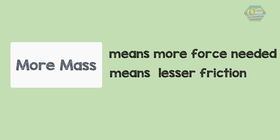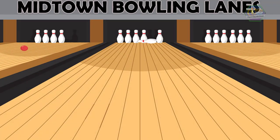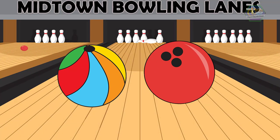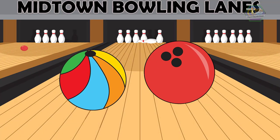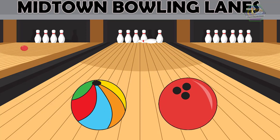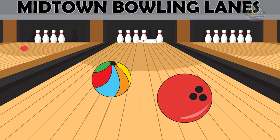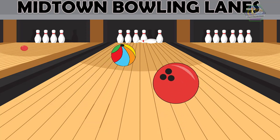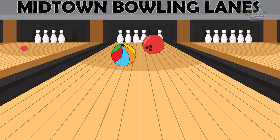To understand this, let's look at an example. Let's say you have two balls of the same size but different masses, like a plastic ball and a bowling ball. The bowling ball is going to be harder to move and to stop. It has more inertia because it has more mass.